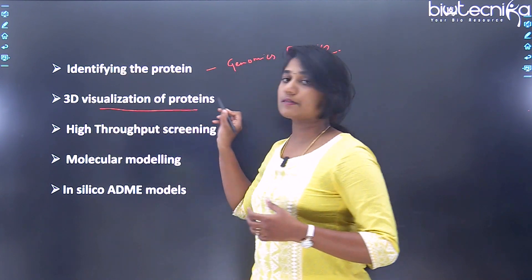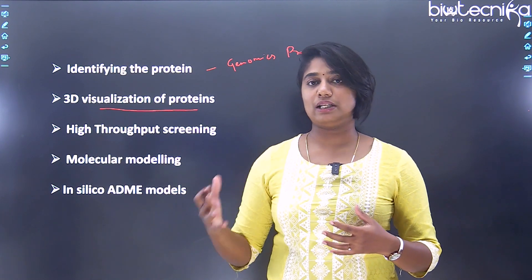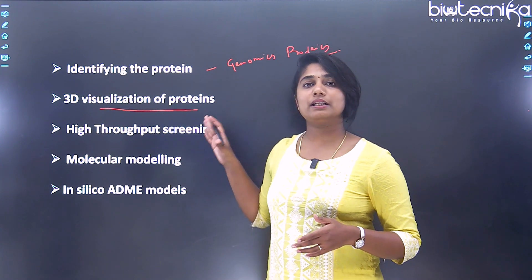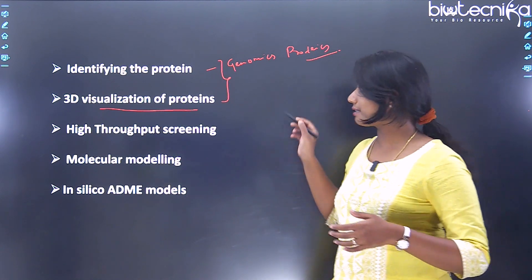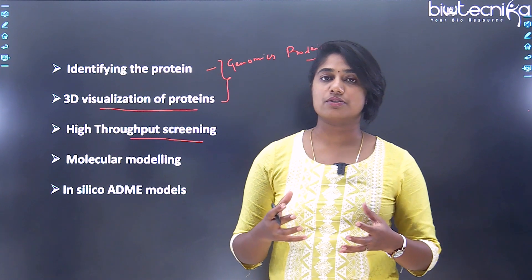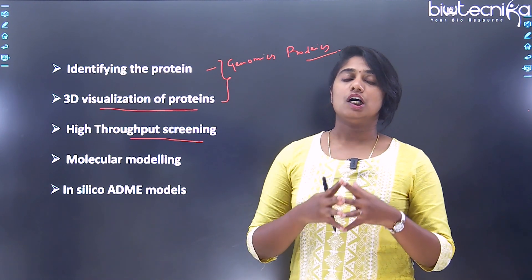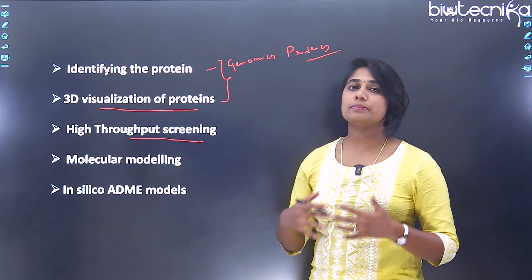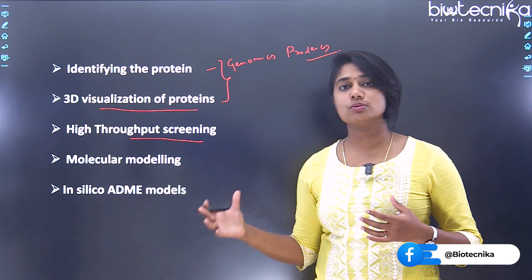Second is 3D visualization of these proteins. Many proteins may have 3D structures already available in databases, and even if not, bioinformatics helps us predict these structures — that is what we mean by 3D visualization. Next, we come to high-throughput screening, which involves discovering the drug. This chemical moiety is screened from thousands and millions of chemicals available in databases to find the most suitable drug for a particular protein, involving many bioinformatic tools and techniques.